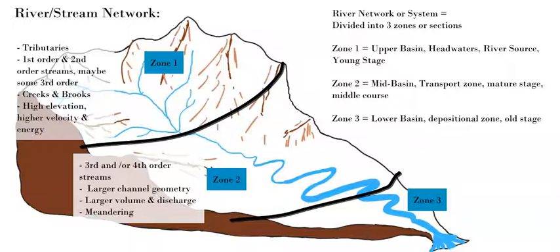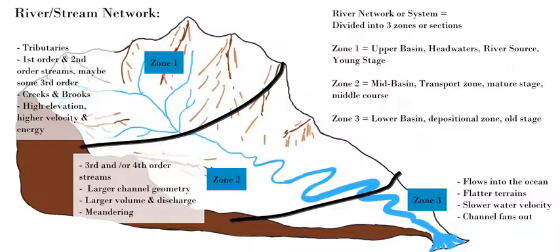The middle course involves features like meandering and oxbow lakes, with different depositional and erosional characteristics. Eventually the river flows down to zone three — the lower basin or depositional zone — which is a very old part of the river. The water has taken a long time to get there, and the terrain is usually flat, including flood plains, marshes, and wetlands. There is still some meandering and slight erosional processes, but definitely a lot more deposition of sediment carried down by the river.